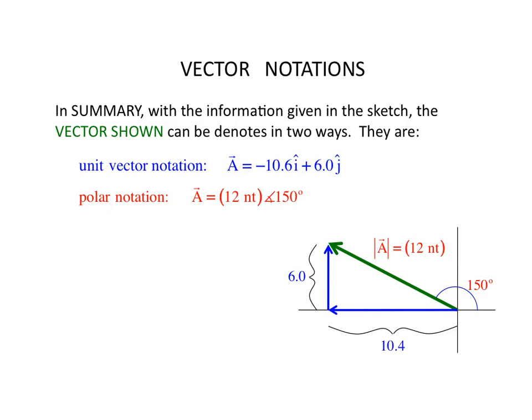As you have probably run into in earlier videos, if you were given the magnitude and the angle, you would use a polar notation to identify and characterize the vector. If you were given the magnitude of the components, you would use the unit vector notation to characterize the vector.